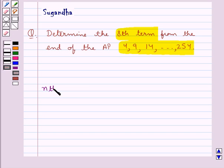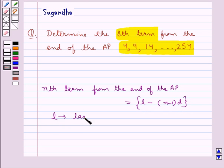Now the nth term from the end of the AP is given as L minus n minus 1 into d, where L is the last term of the AP and d is the common difference of the AP.